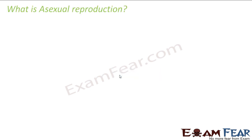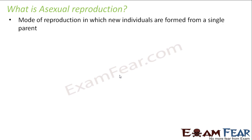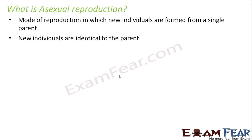What is asexual reproduction? It is a mode of reproduction in which new individuals are formed from a single parent. New individuals are identical to the parent because there is no scope for variations — no new characters are observed in the new organism. It is also a faster mode of reproduction.